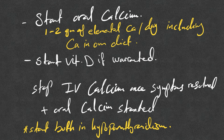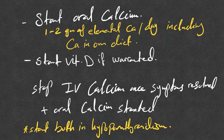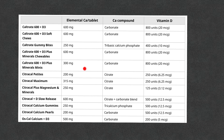All patients should start oral calcium as soon as possible — typically 1 to 2 grams of elemental calcium per day including dietary calcium — along with vitamin D supplements if indicated. Stop IV calcium when symptoms resolve and oral calcium is started. There are various oral formulations with different amounts of elemental calcium, some combined with vitamin D, which you can look up as needed.